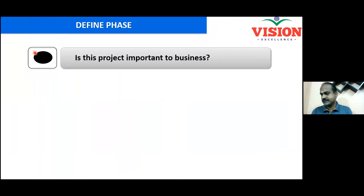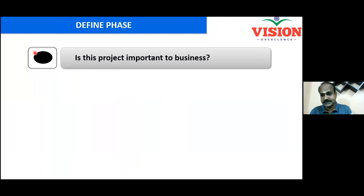If you are in the define phase of an improvement project in your organization, you should be able to answer a few critical questions. If you can answer all these questions properly, the define phase is done and you can move on to the measure phase. The first question: is this project important to business? Obviously it is important to you, but is it also important to your business? The answer should be yes — only then will your project be approved by your project sponsor.